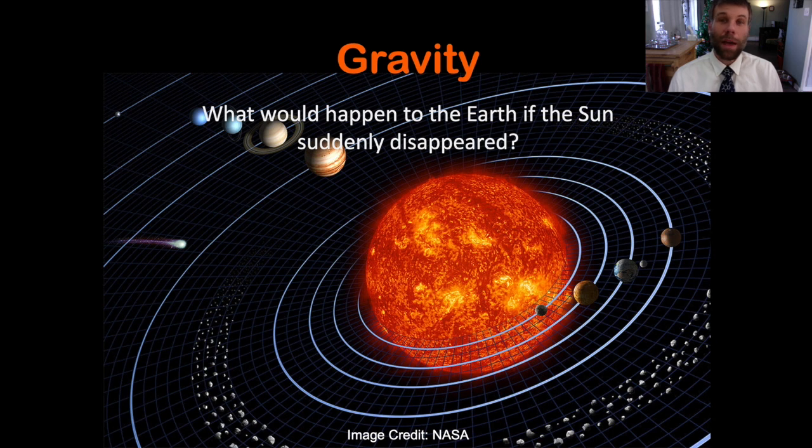So if you ask the question, what happens to the Earth if the Sun disappears? How gravity behaves is key to being able to answer this question. So first, what would happen to the Earth if the Sun's gravity disappeared? The answer, which I hope you came up with, is that in the absence of gravity holding Earth in orbit, Earth should just travel in a straight line according to Newton's first law, the law of inertia.